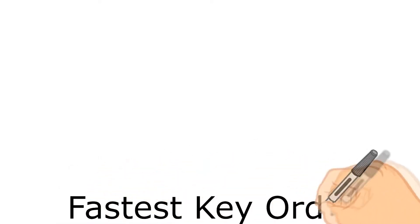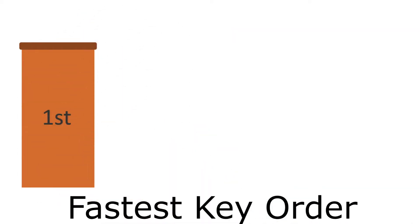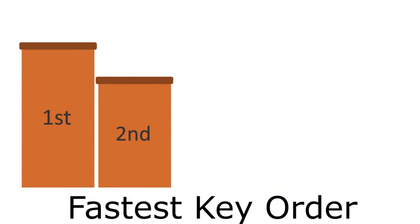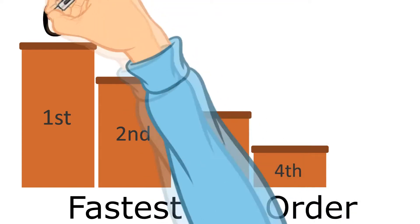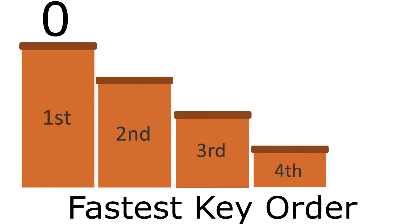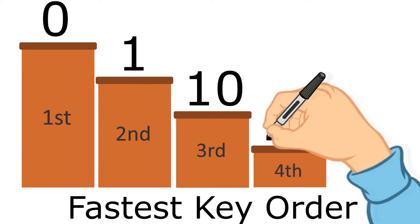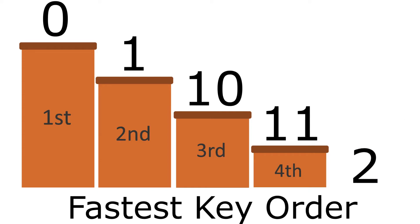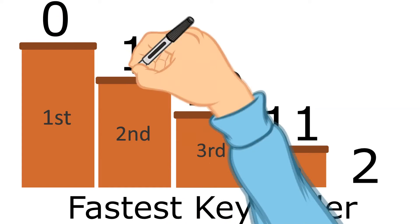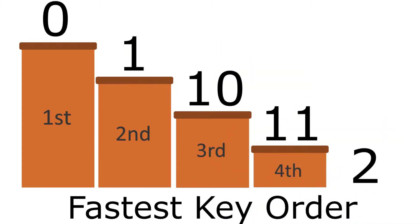We've been looking at choosing the key, and so far we've got four numbers we could choose based on them being very simple. The very fastest key is zero, and if there wasn't a zero, the next fastest is one. After the one is eleven. All of those have zeros and ones in them. The next key we'd be choosing would be a two — you choose two as your key if you haven't got zeros and ones in one of these combinations: 0, 1, 10, or 11.